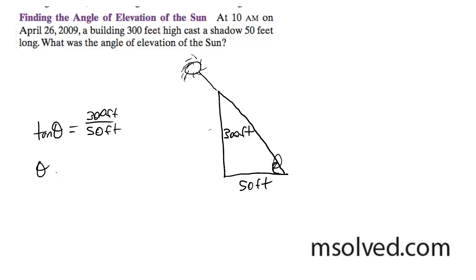Now what we're going to do here is theta is equal to inverse tangent of 300 over 50, which reduces down to 6.